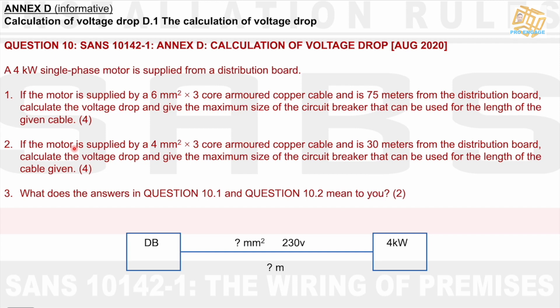And then the question in 10.2 is the same question, except for they change some values. If the motor is supplied by 4 millimeters squared cable, three core armored and is 30 meters from the DB. So they've changed the 6 mil to 4 mil squared and they've changed the distance to 30 meters from 75. Question three then says, what does the answers in 10.1 and 10.2 mean to you?